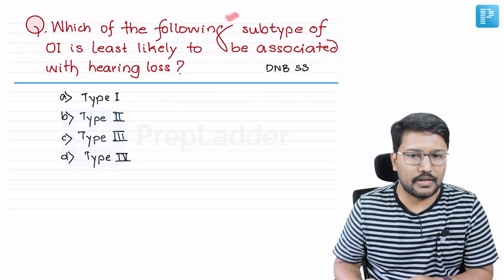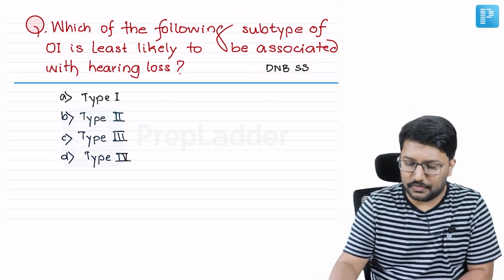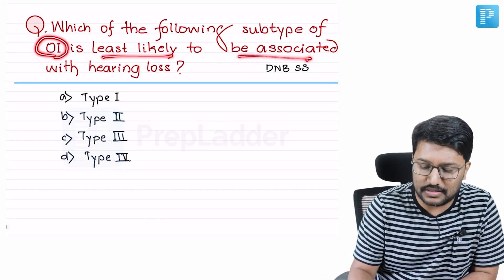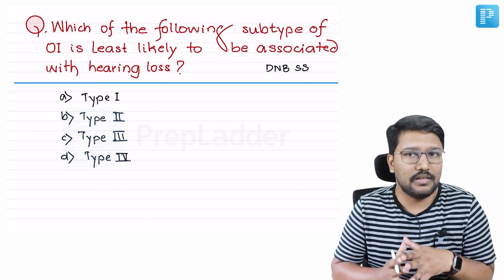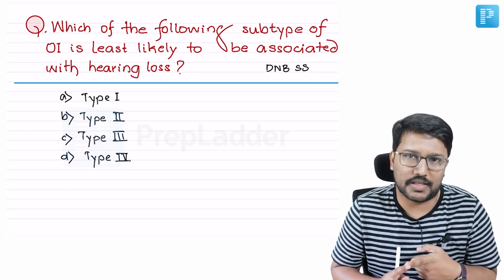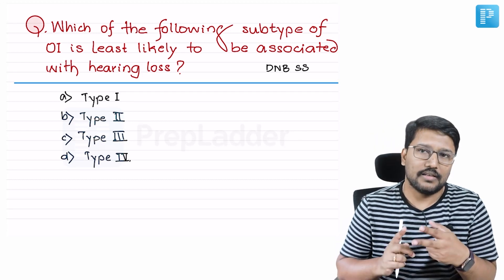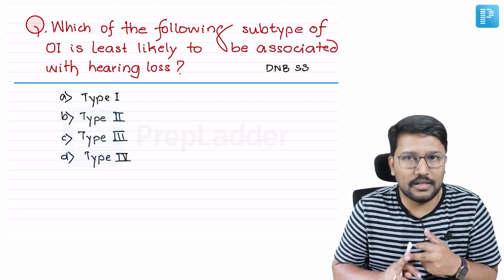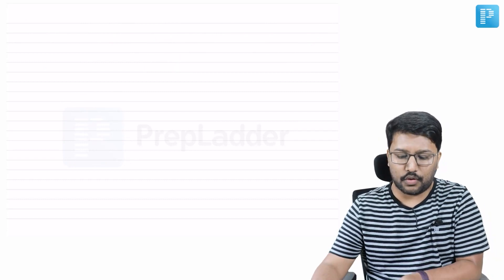The third question, a recall from a previous DNB super-specialty entrance exam: which subtype of osteogenesis imperfecta is least likely to be associated with hearing loss? This means osteogenesis imperfecta may be associated with hearing loss, so we need to know what kind of hearing loss is expected — sensorineural or conductive — and which variants are typically associated with hearing loss.